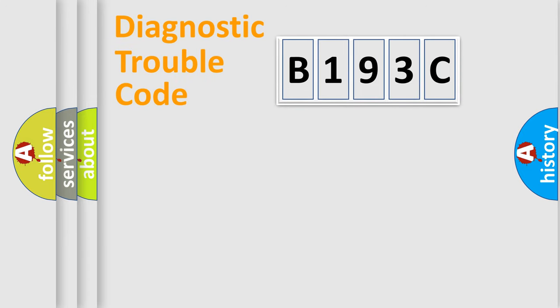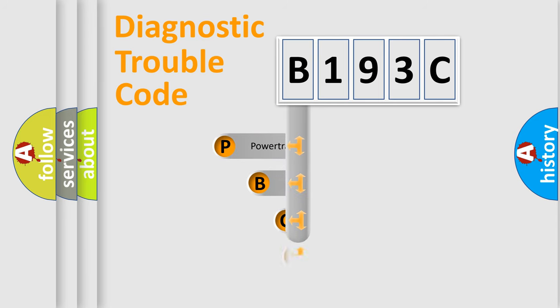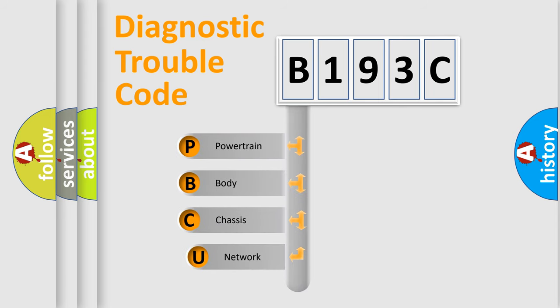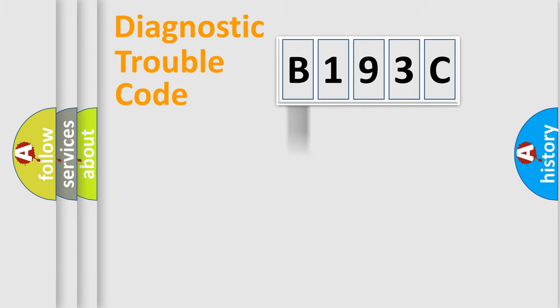Let's do this. First, let's look at the history of diagnostic fault code composition according to the OBD2 protocol, which is unified for all automakers since 2000. We divide the electric system of an automobile into four basic units: powertrain, body, chassis, and network.